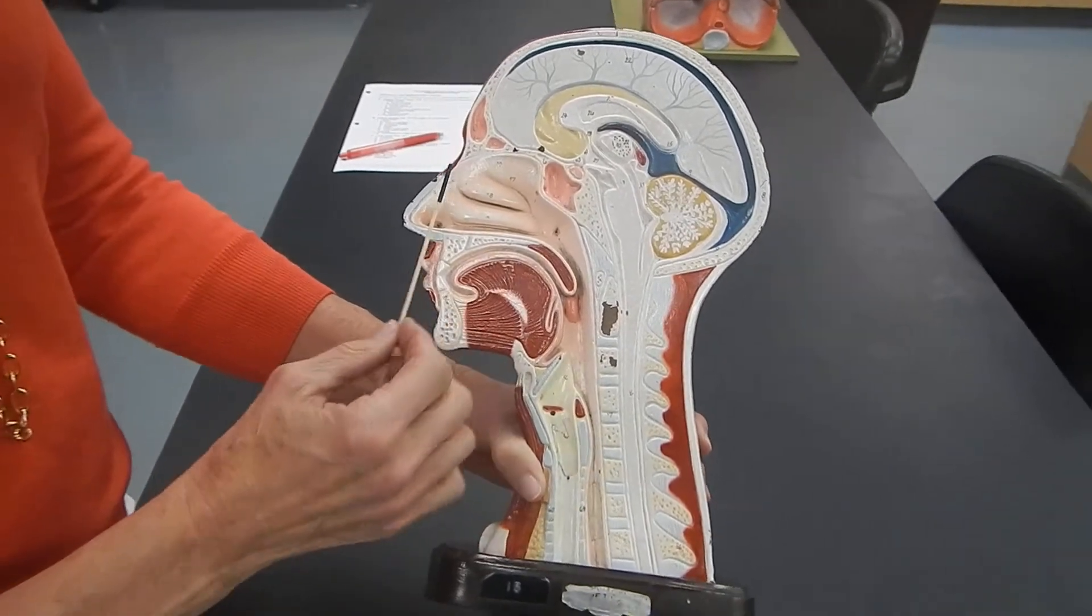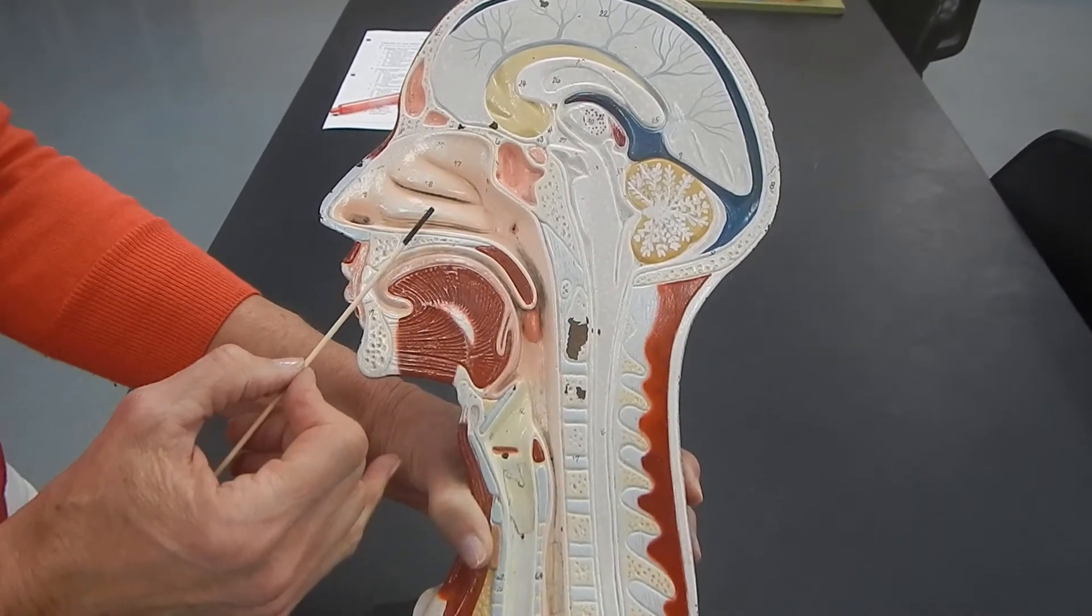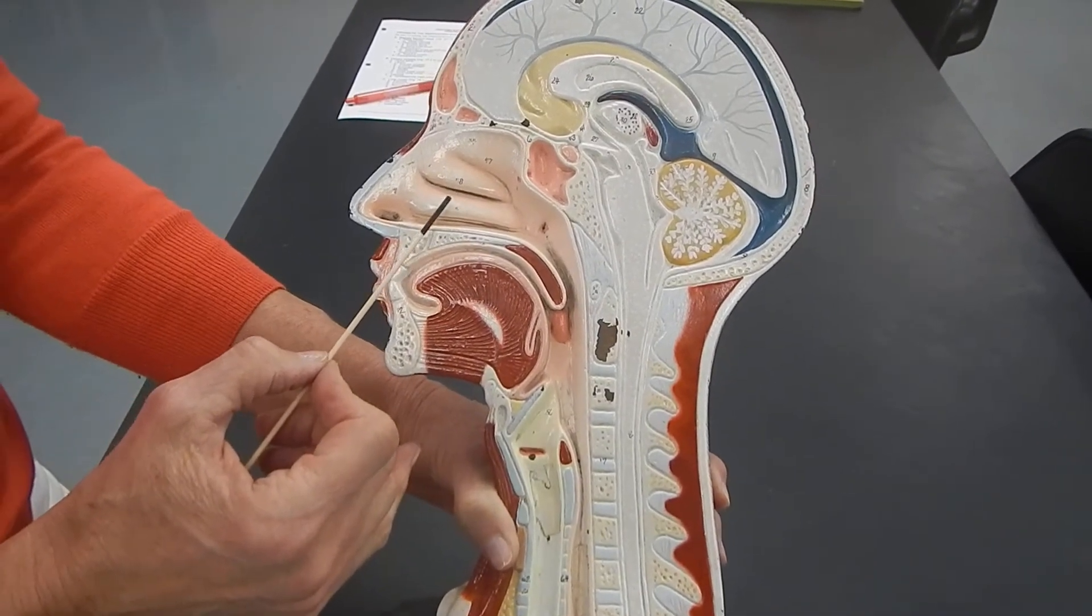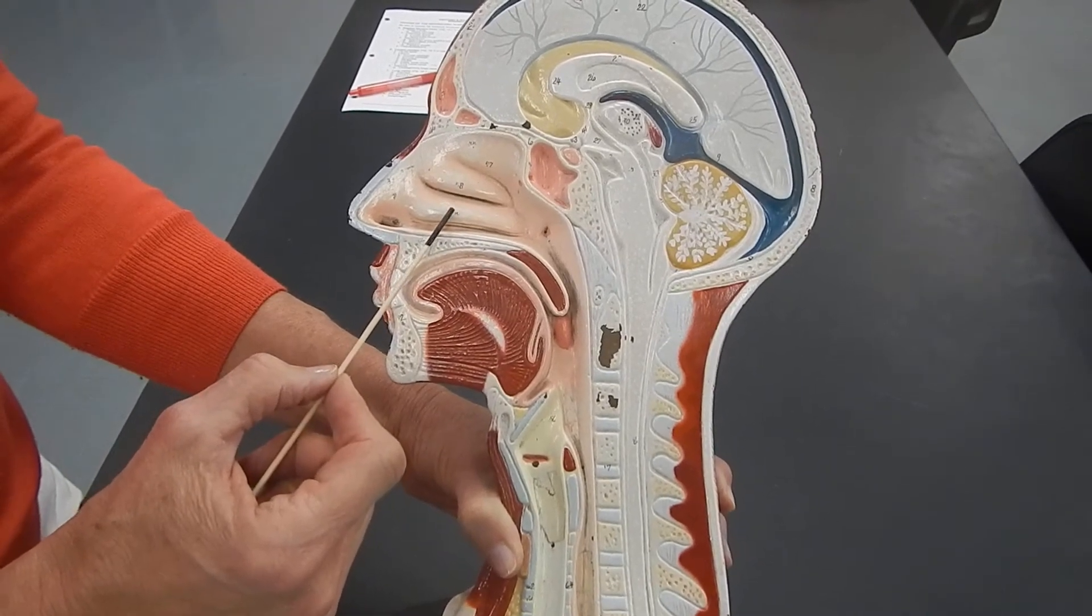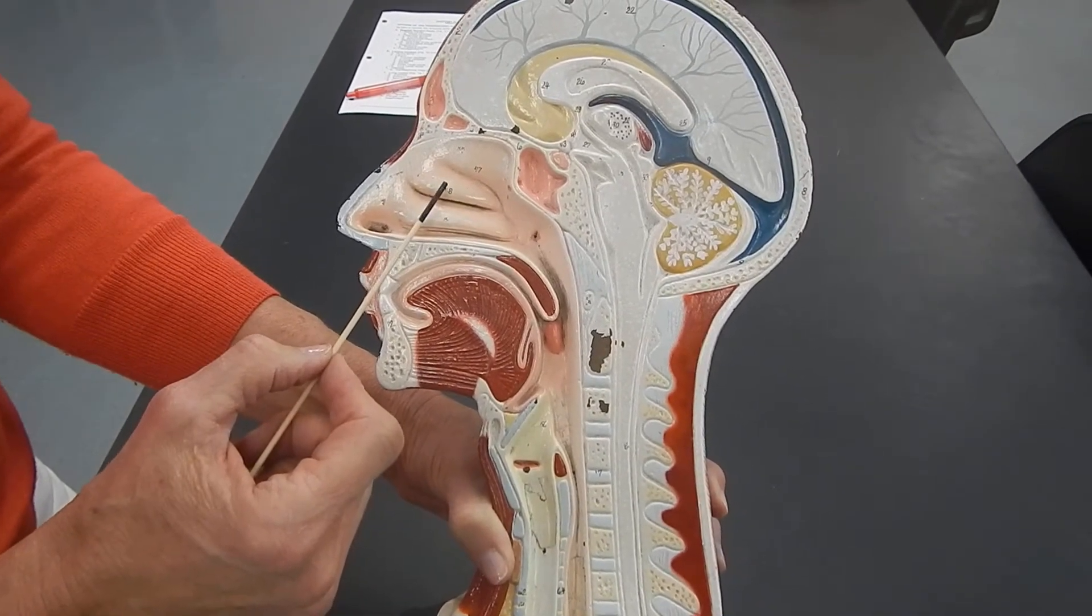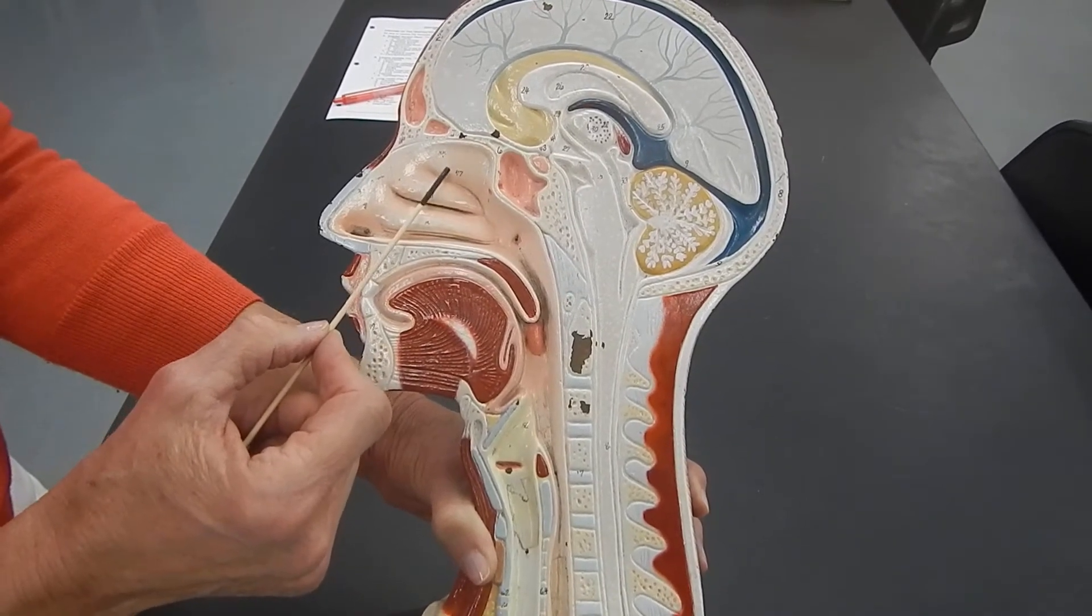So here we are in the nose. These bumps or ridges in the nose, and there are three of them, are called nasal concha. This is the inferior concha, this is the middle nasal concha, and this is the superior nasal concha.